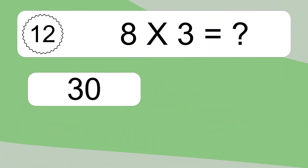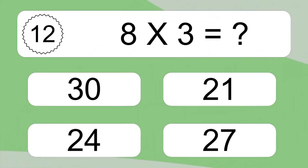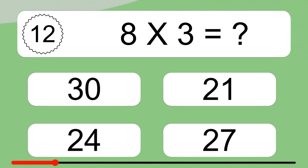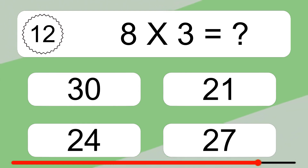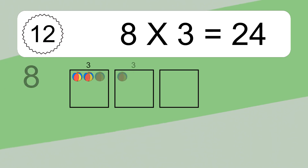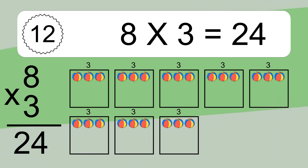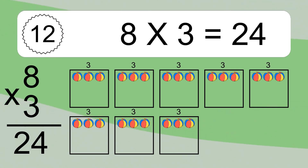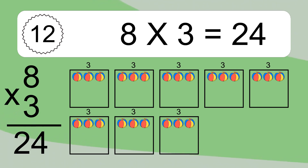8 times 3 equals what? 8 times 3 equals 24. We have 8 boxes, and each box has 3 colorful balls inside. If you count all the balls in all the boxes together, you will have 8 times 3 balls. This equals 24 balls.